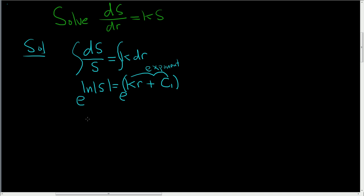Now e to the natural log of s is just s with the absolute value, and this is equal to e to the c1 e to the kr.